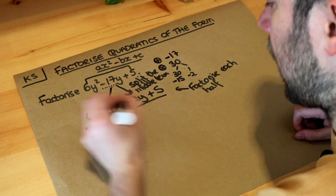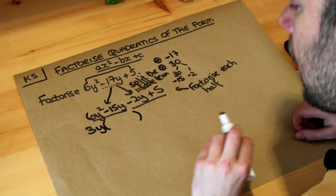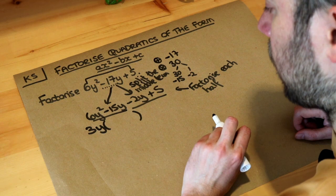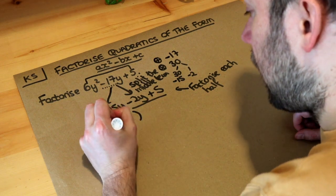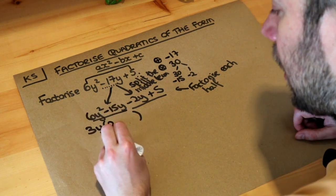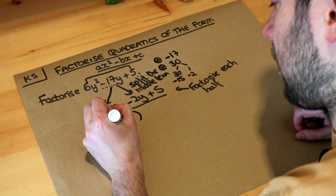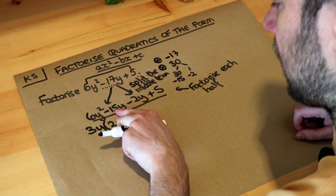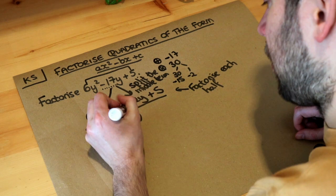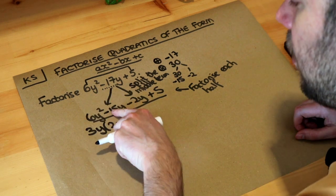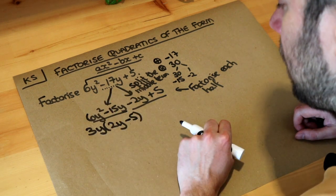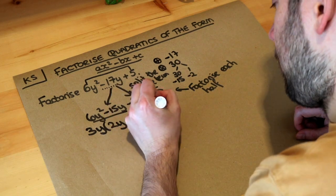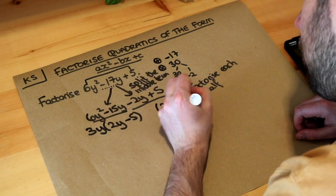We put a bracket and then think: 3y times what gives 6y squared? Well 3 times 2 gives the 6 and y times y gives the y squared. And 3y times what gives minus 15y? 3 times minus 5 gives minus 15y. Then we duplicate that bracket but leave a space in the middle.